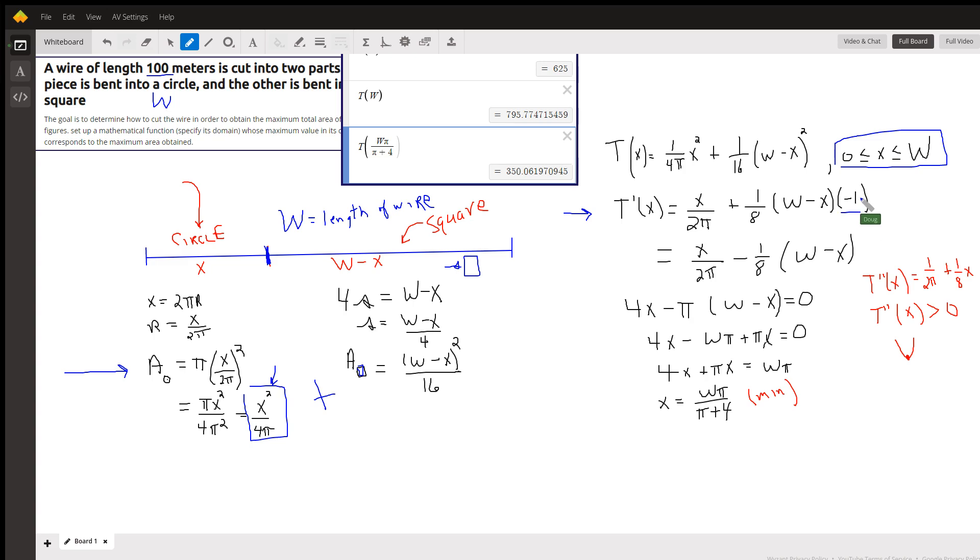Chain rule, multiplied by the derivative of the inside. Remember, w is a constant. So there's the formula, first derivative set that equal to 0.